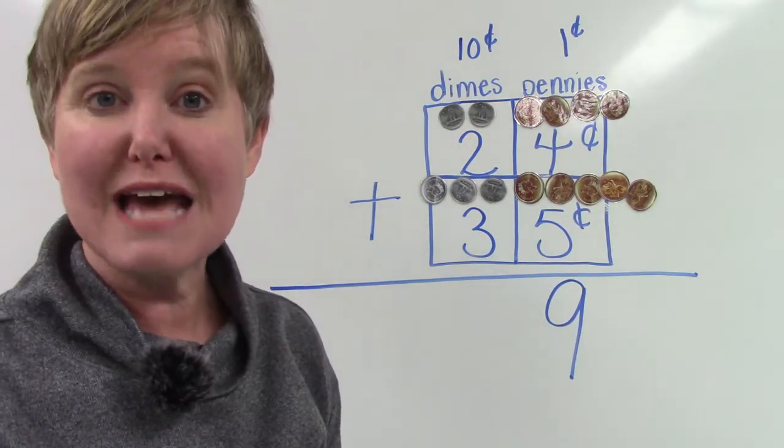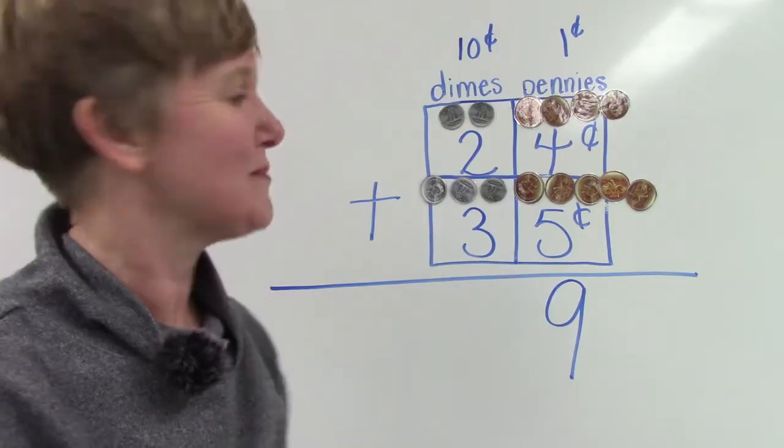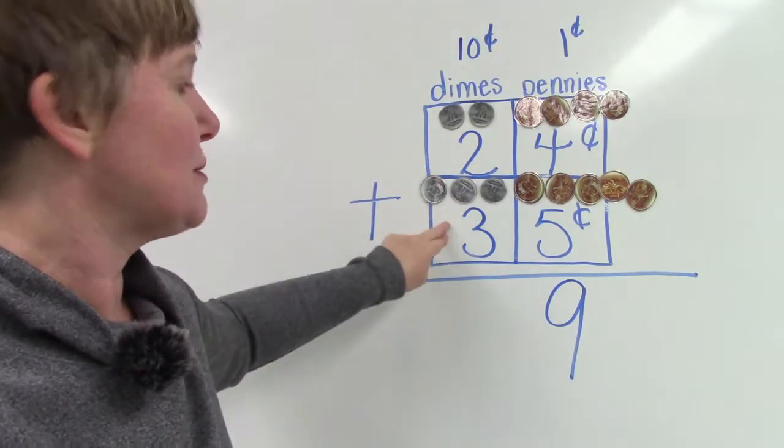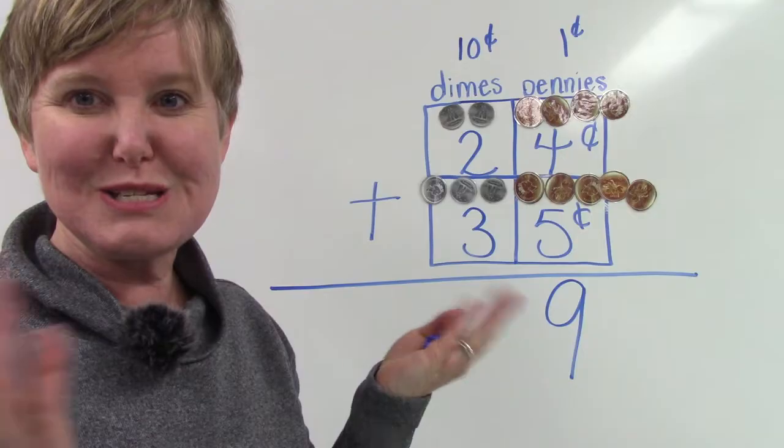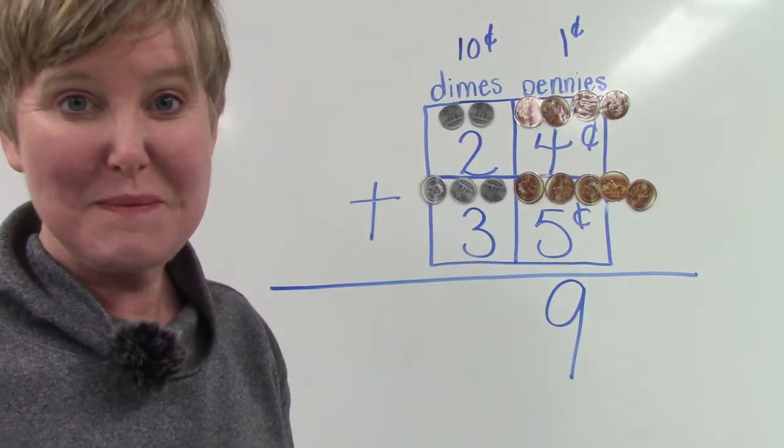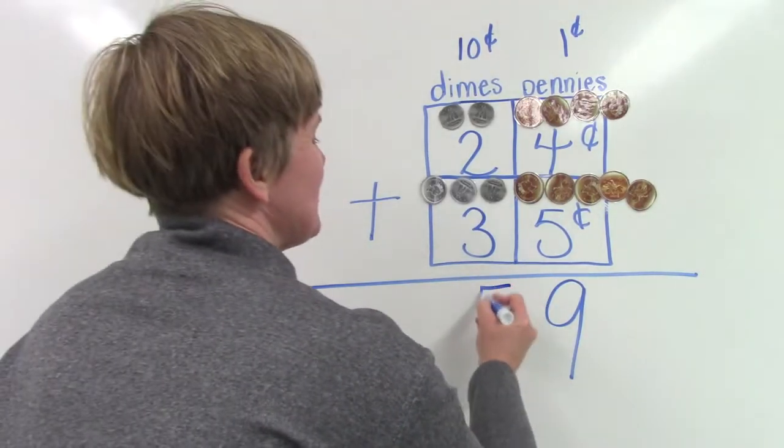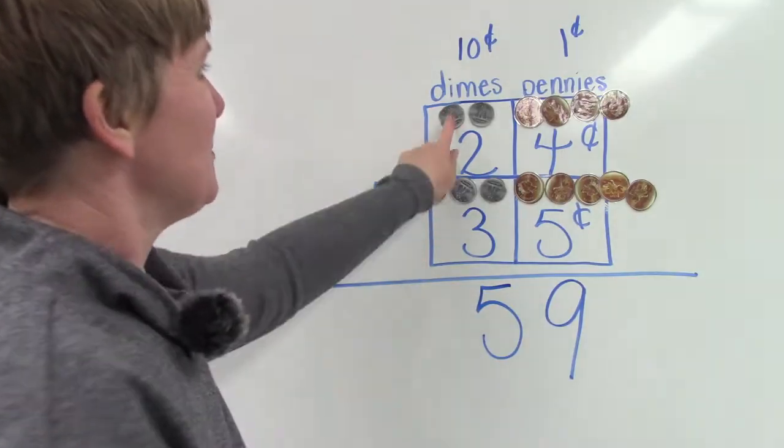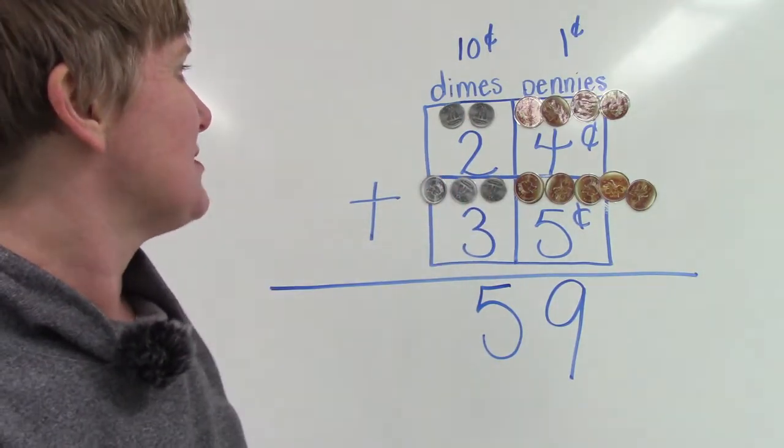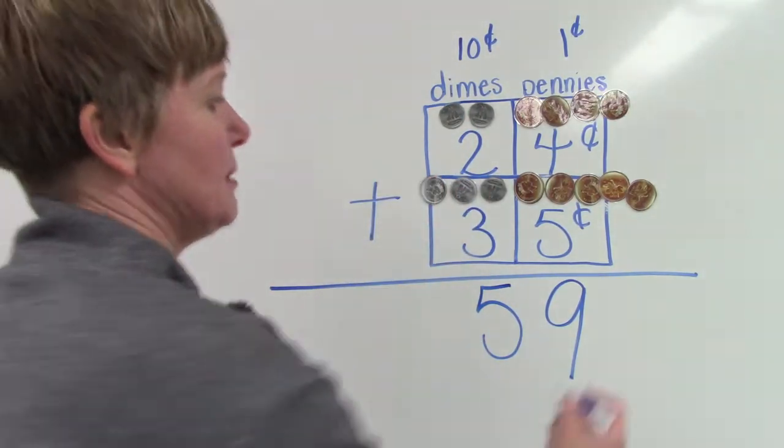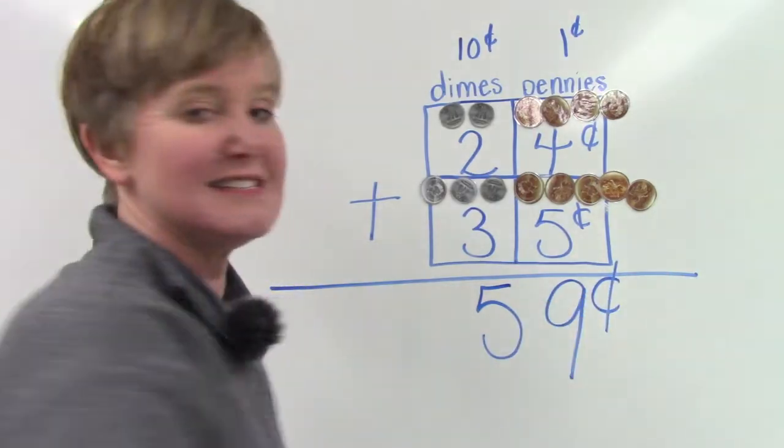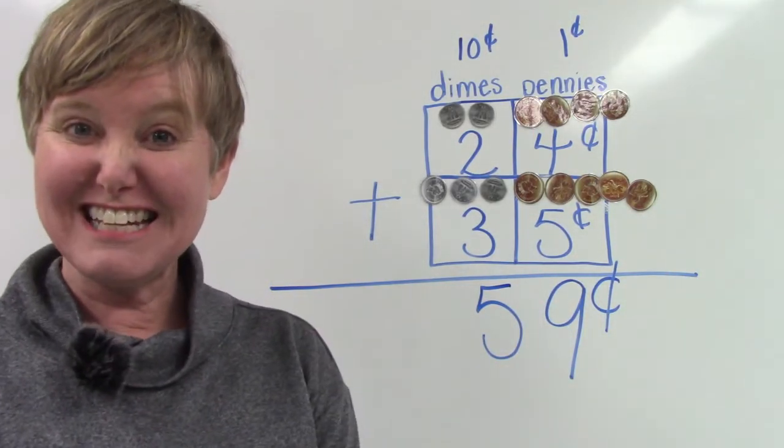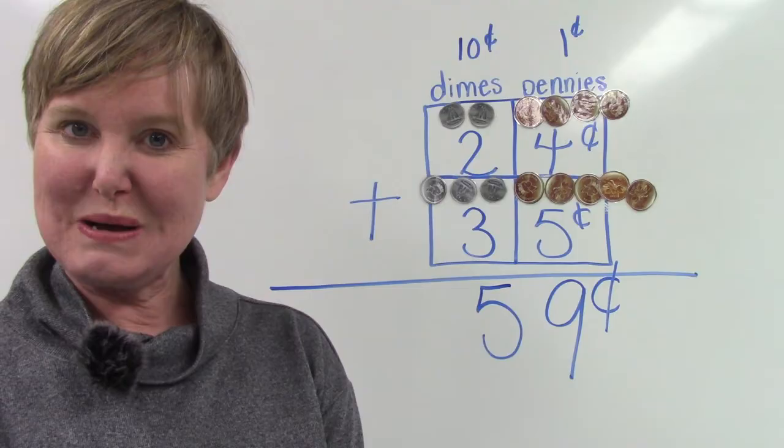Well, now we are going to add our tens place or our dimes together. We have two dimes plus three dimes. What is two plus three? Did you say five? One, two, three, four, five. 24 cents plus 35 cents is 59 cents. Well done.